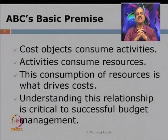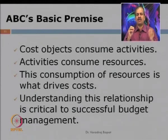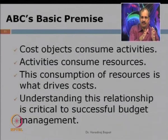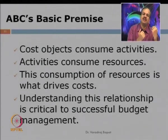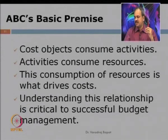The basic premise of ABC is that cost objects consume activities. For a particular customer or product, certain activities have to be performed — so they consume activities, and activities in turn consume resources. For example, if a machining process is being done and you require 3 hours of machining, machining becomes an activity, and that machining in turn consumes resources — maybe power, maybe machine depreciation and so on. So consumption of resources is something which drives the cost, and in cost accounting we try to understand this relationship.